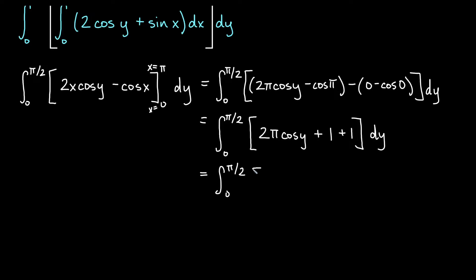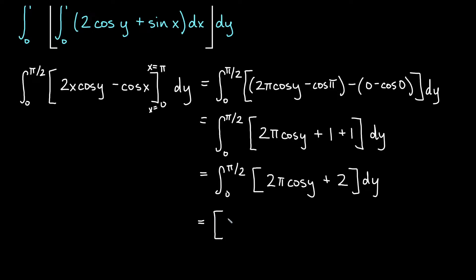So we have the integral from 0 to pi over 2 of 2 pi cosine y plus 2. Now integrating with respect to y: the 2 pi is a constant, so the antiderivative of cosine y is sine y, giving us 2 pi sine y. The antiderivative of 2 with respect to y is 2y. We evaluate from y equals 0 to y equals pi over 2.